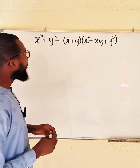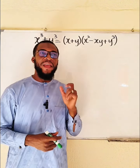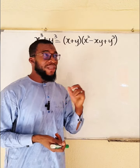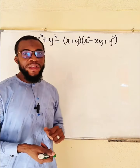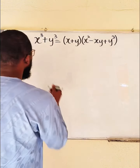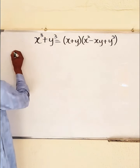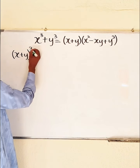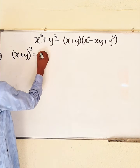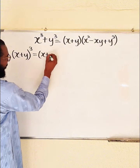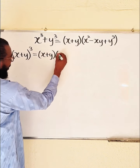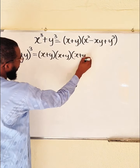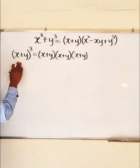Alright, I know that if I take x plus y whole to the power of 3, I shall obtain terms that correspond to x cubed and y cubed. So let's do that. If I have x plus y raised to the power of 3, this is the same thing as x plus y multiplied by x plus y multiplied by x plus y. This is the expansion of this.